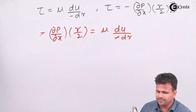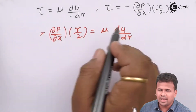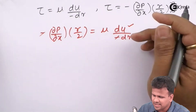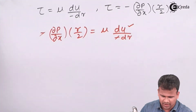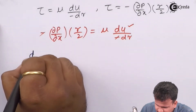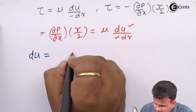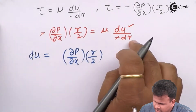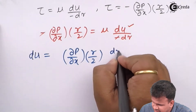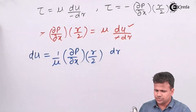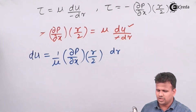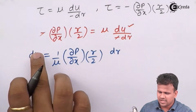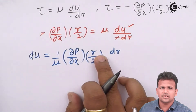The two minus signs cancel, and we are left with the equation. To calculate velocity, we keep du on one side and move all other terms to the other side: du equals (1/mu) times (∂p/∂x) times (r/2) times dr. This is a differential equation in terms of r and dr — velocity is a function of the radial coordinate r.